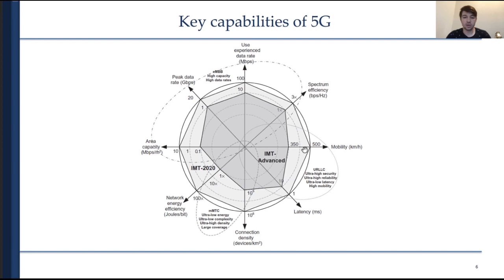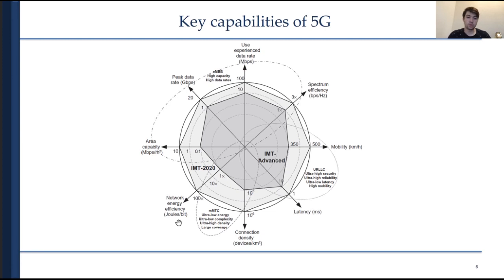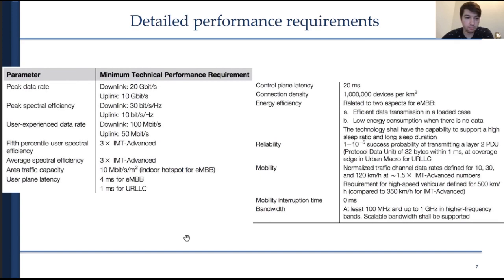For mobility, the peak currently handled by 4G is 350 kilometers per hour, and we want to extend it to 500 kilometers per hour. Latency should be reduced by 10 times — from 10 milliseconds to 1 millisecond. Connection density should be increased by an order of magnitude. Network energy efficiency should increase by 100 times, meaning battery lifetime would be 100 times larger — a very strict requirement. Area capacity should also grow. More details and exact technical requirements for 5G systems can be found in the referenced table.